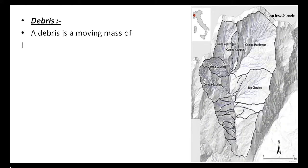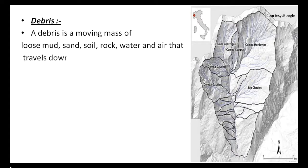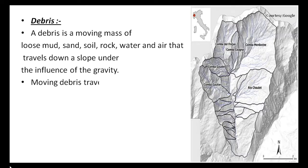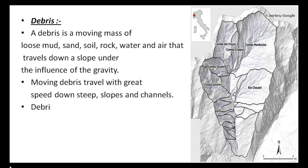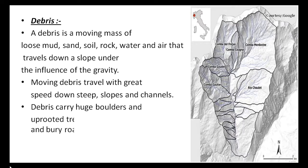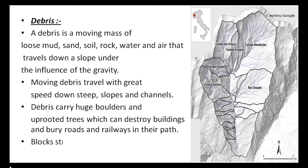Debris is a moving mass of loose mud, sand, soil, rock, water, and air that travels down a slope under the influence of gravity. Moving debris travels with great speed down steep slopes and carries huge boulders — large rocks — and uprooted trees, which can destroy buildings and bury roads and railways in their path.